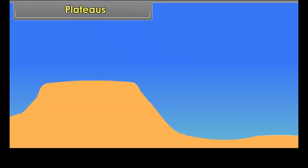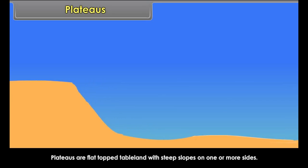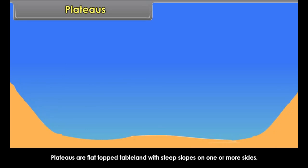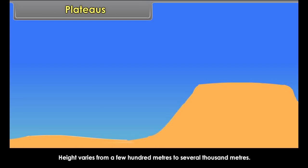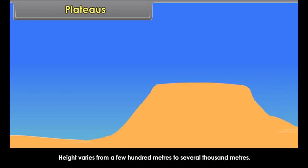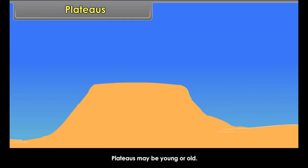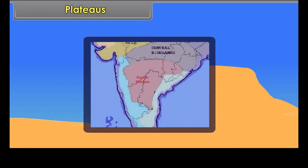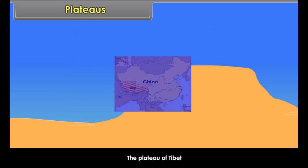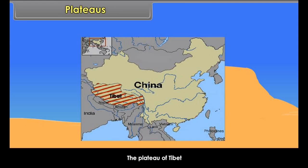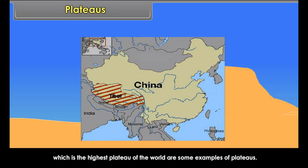Plateaus are flat-topped table land with steep slopes on one or more sides. Height varies from a few hundred meters to several thousand meters. Plateaus may be young or old. The Deccan Plateau of India, the Western Plateau of Australia, and the Plateau of Tibet — which is the highest plateau in the world — are some examples.